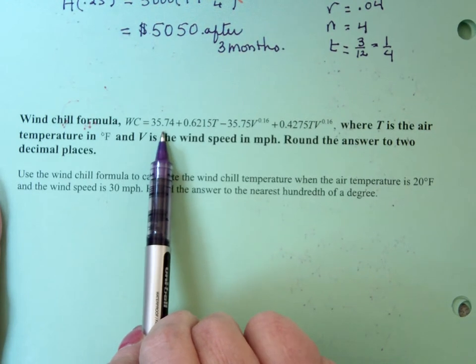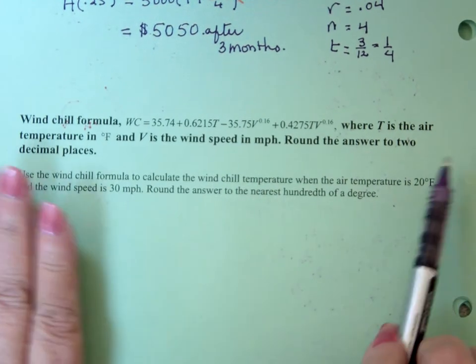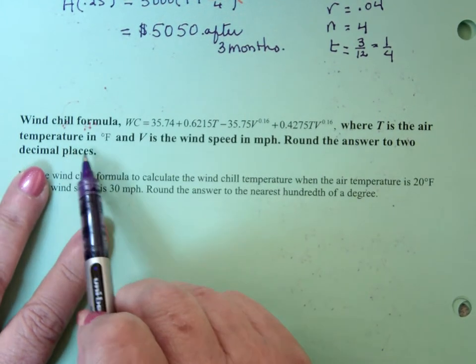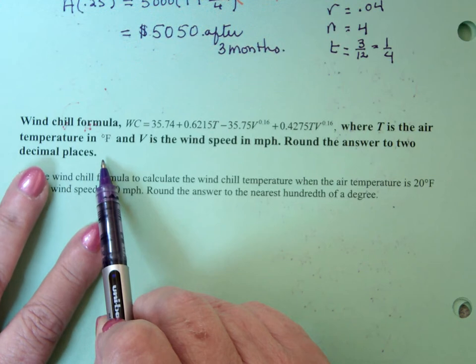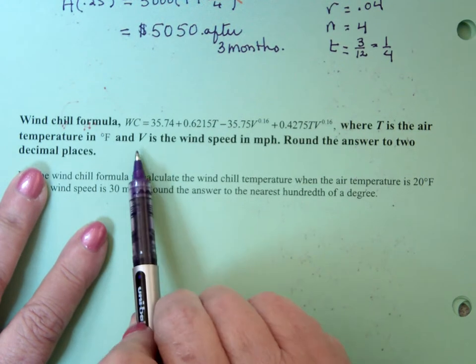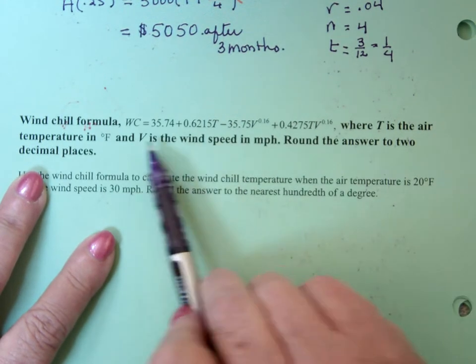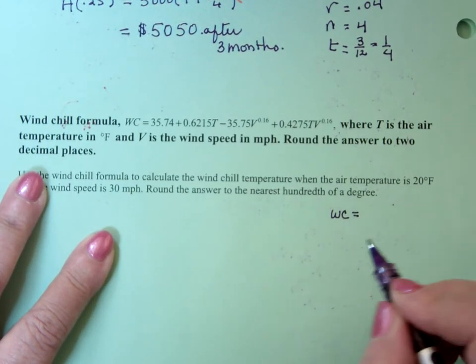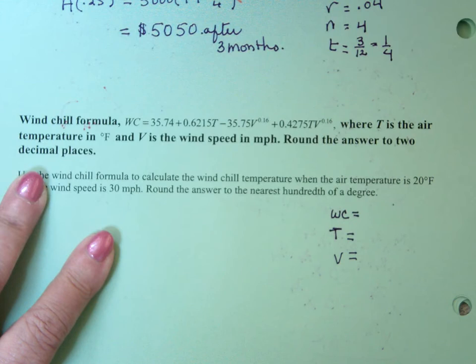Is the air temperature in degrees Fahrenheit. And we need to know that, because if we were in Canada, it would be degrees centigrade. I found out when I lived there. Not lived there, when I visited there. V is the windchill, is the wind speed in miles per hour. And so we only really have three variables. We have WC, we have the windchill. We have T, we have the temperature. And we have V, we have the wind velocity. So we have three variables in this problem.